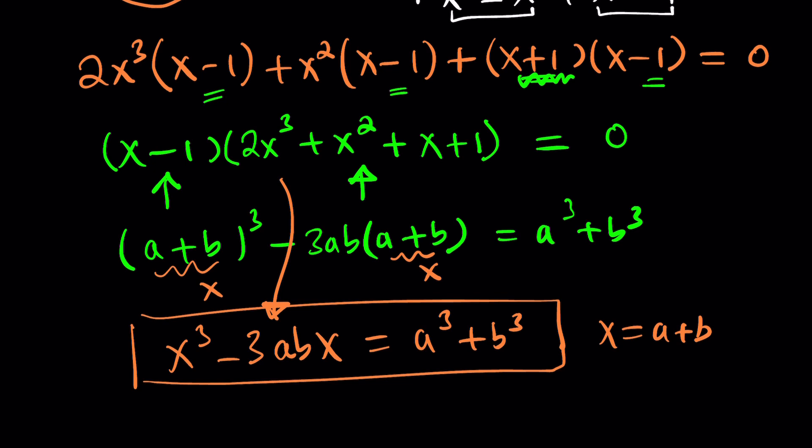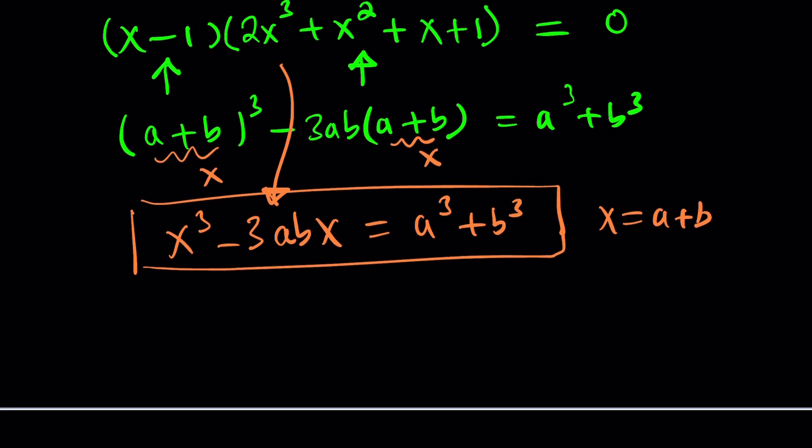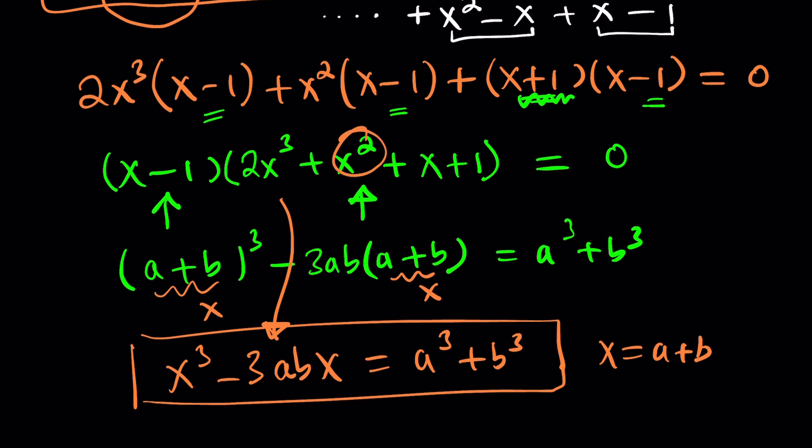So by making our equation look like this, we can actually solve it. But what do you notice about this equation? There is no x squared. So we need to get rid of x squared. How do you get rid of x squared?